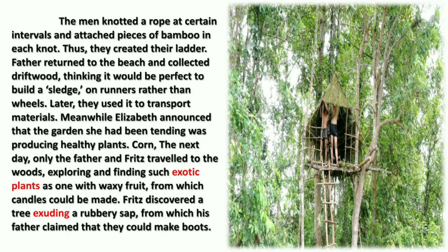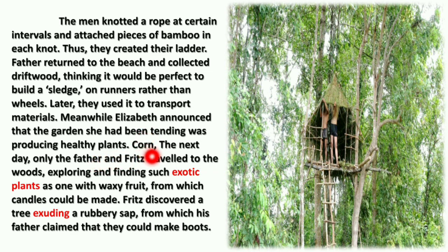The men knotted a rope at certain intervals and attached pieces of bamboo at each knot to build a ladder up to the tree. Father also returned to the beach and collected driftwood, building a sledge on runners rather than wheels to transport materials. Meanwhile, Elizabeth announced that the garden she had been tending was yielding healthy plants like corn and maize.